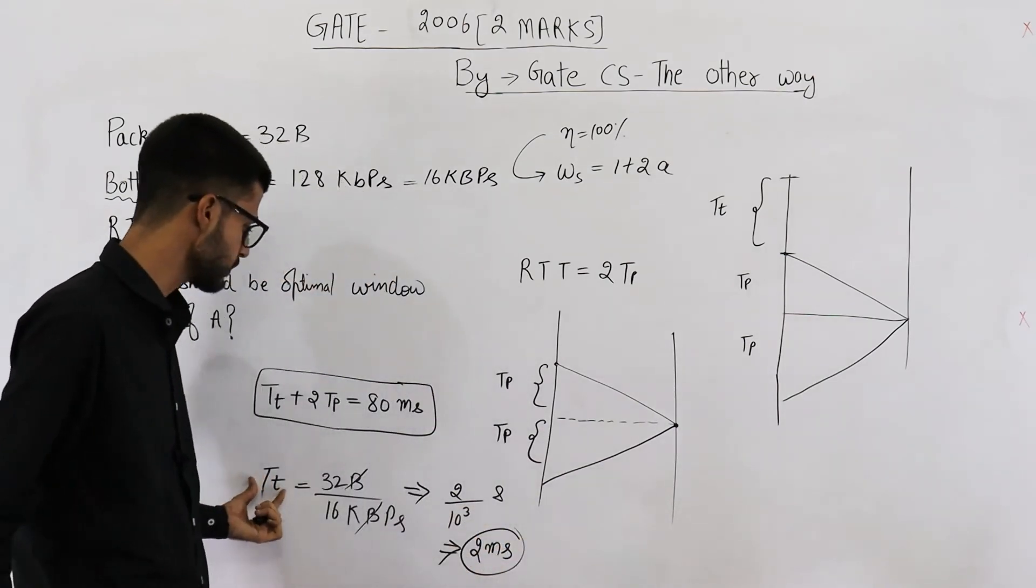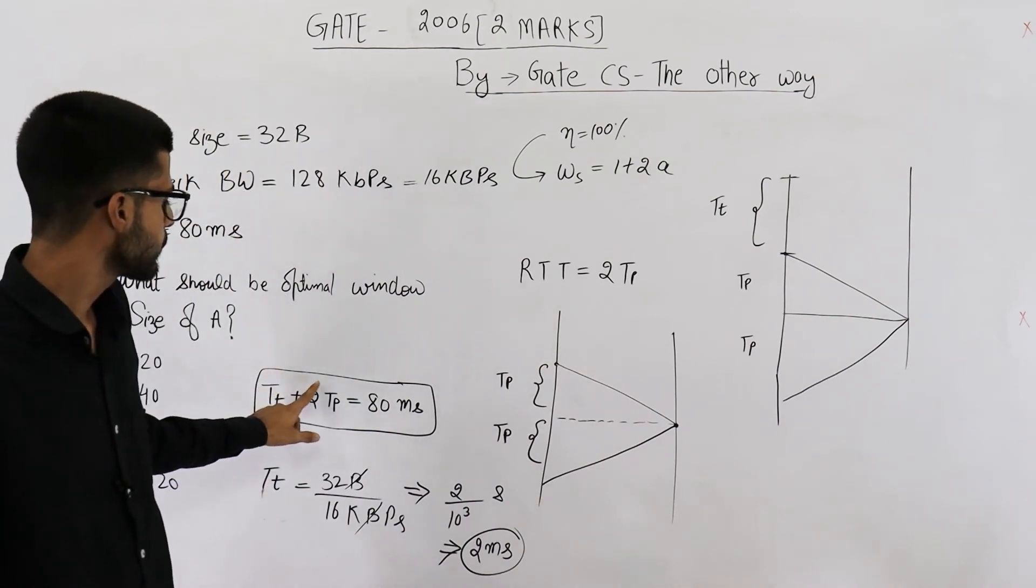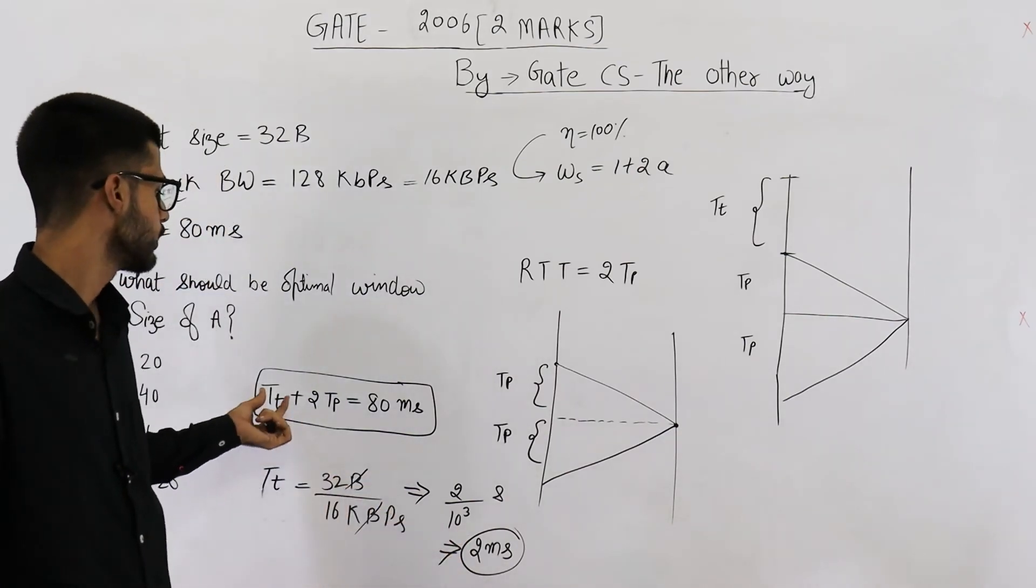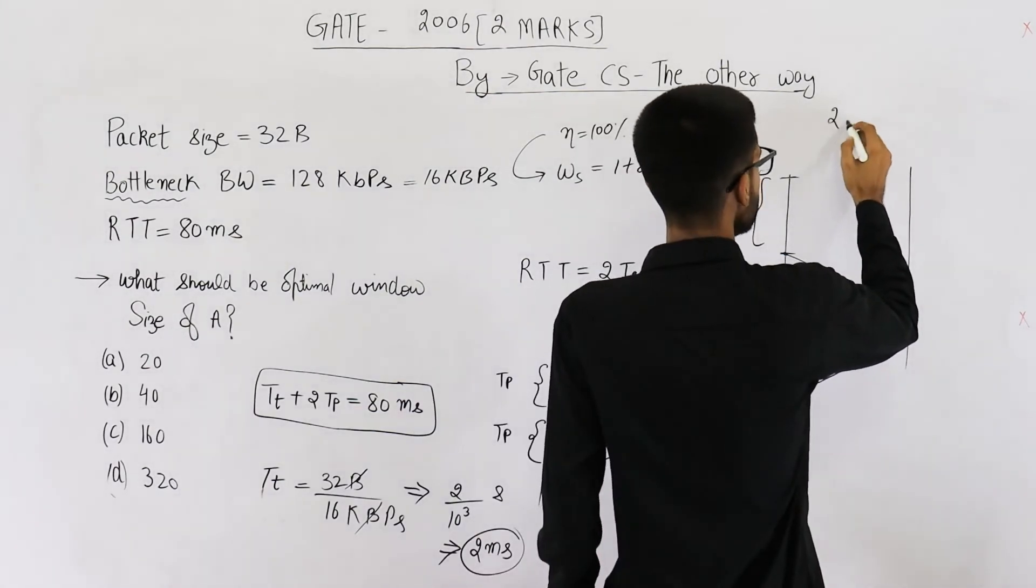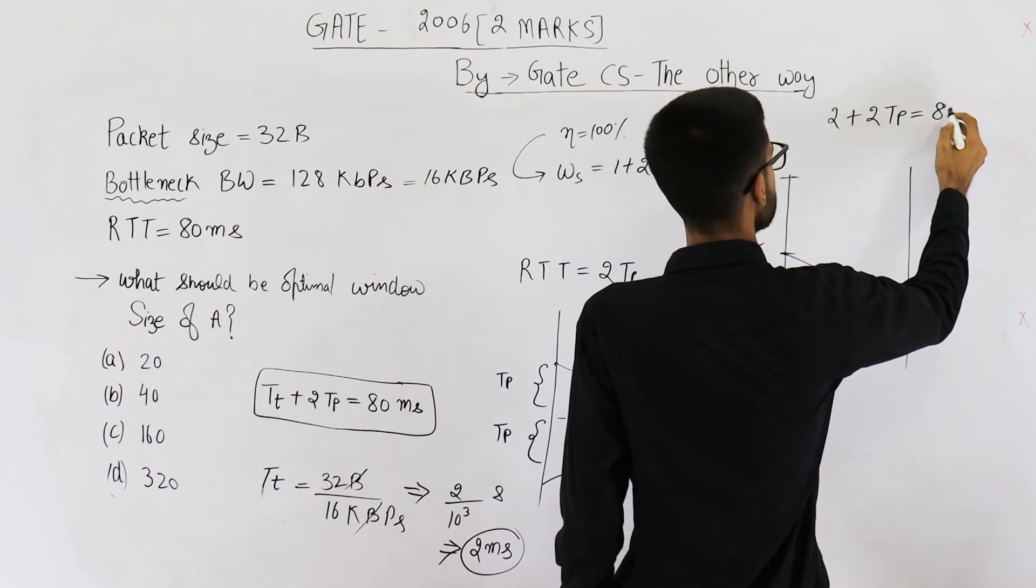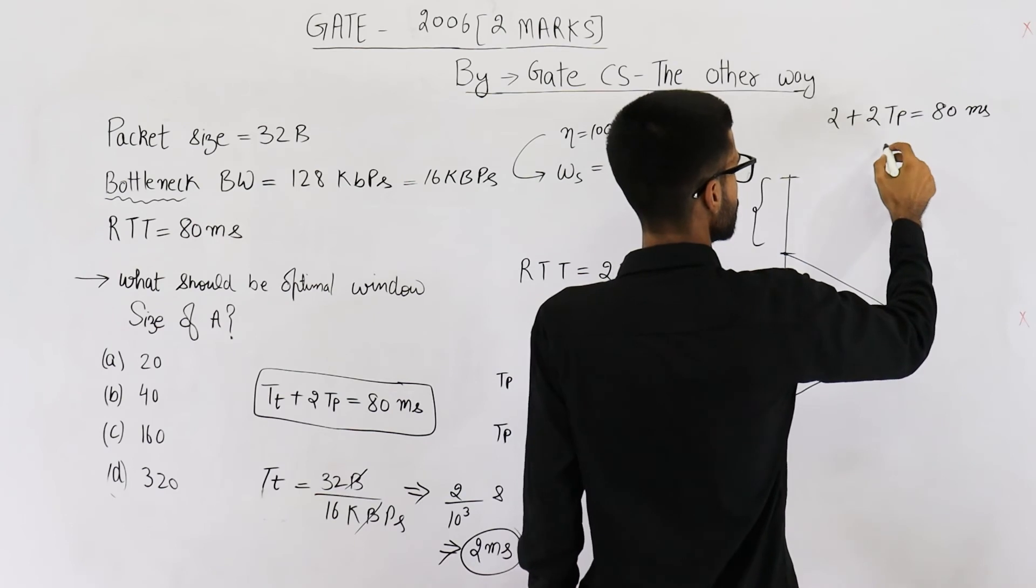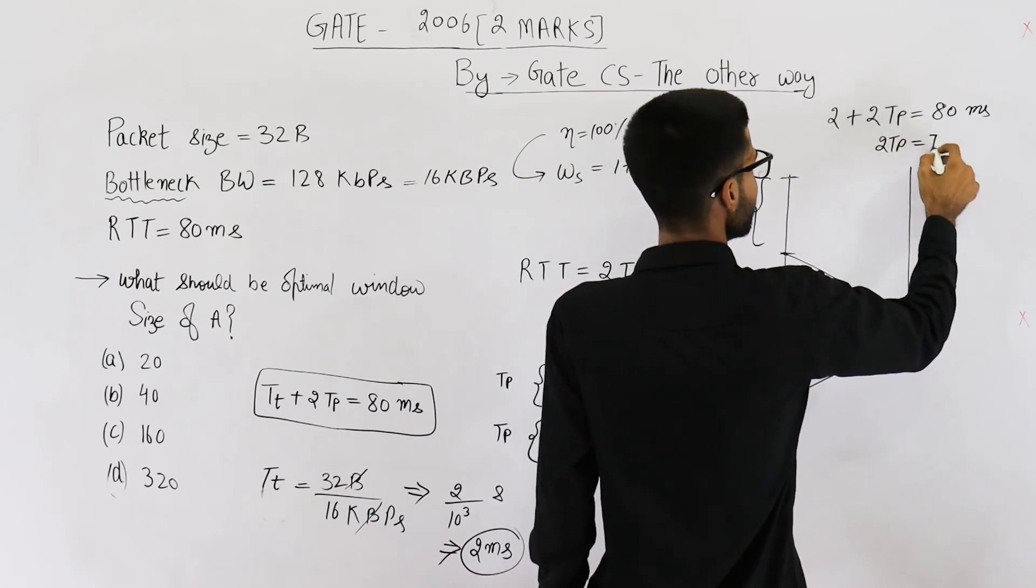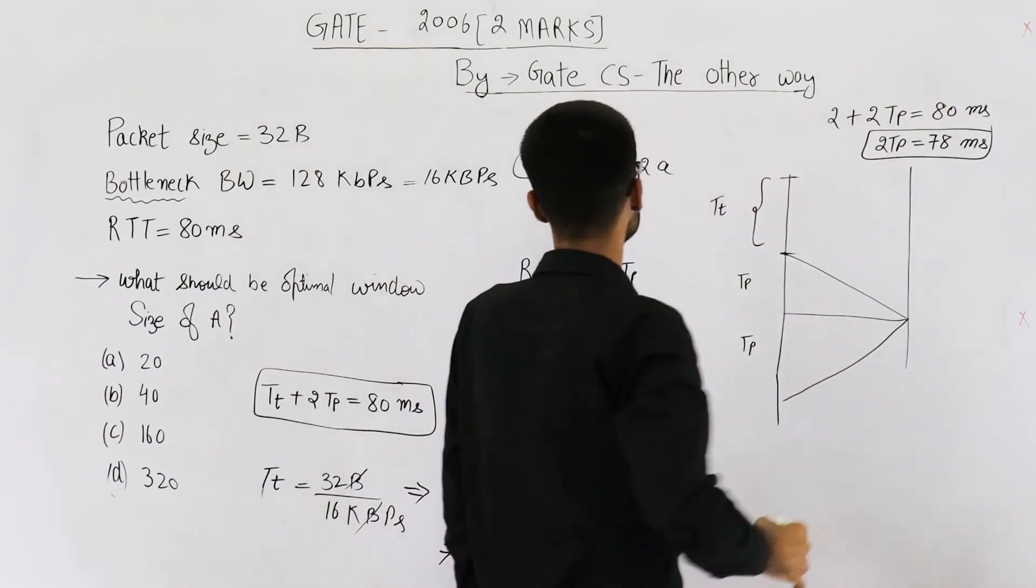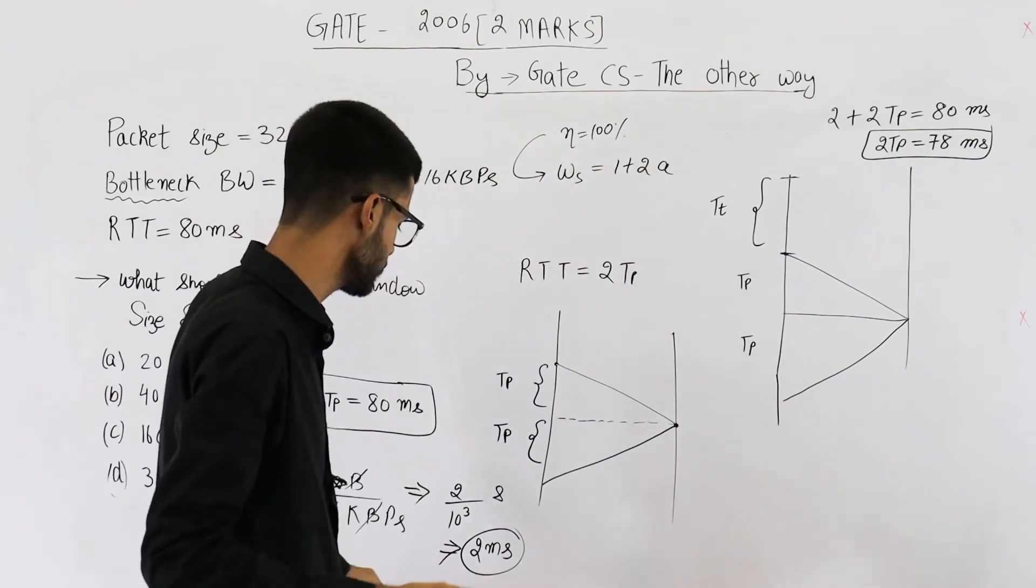That means transmission time is 2 milliseconds. Now we also know that TT plus 2TP is 80 milliseconds. Just substitute value 2 here. You are going to get 2 plus 2TP is equal to 80. The unit is milliseconds here as well and here as well. So 2TP is 78. Just keep this in mind. Now we want to determine 1 plus 2A. Let me clear some space.